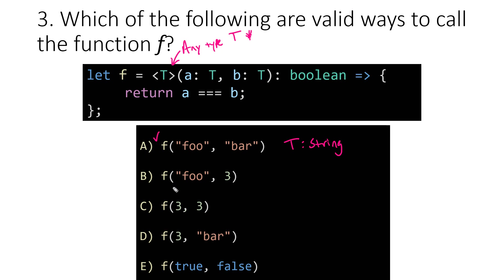If we look at the next example, calling this generic function, T's type for the first parameter a would be string. But then b has to be of type T as well — T was string for this call — and we're trying to give it a number. So this doesn't actually work out; option B is not a valid call to this generic function.